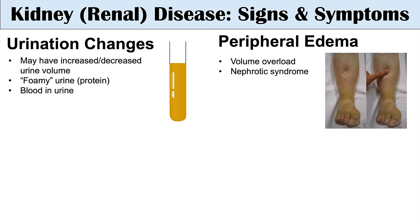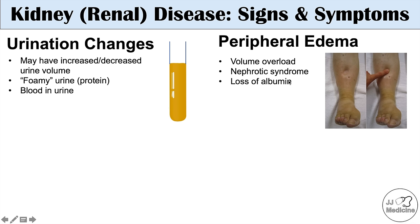We can also see this with nephrotic syndrome, a case of kidney disease where there's a lot of protein losses, particularly loss of albumin. Albumin is the most abundant protein in your blood and helps reabsorb interstitial fluid back into the blood. If there's loss of albumin, as in nephrotic syndrome, there's not enough albumin to reabsorb the fluid from the tissues.